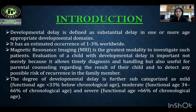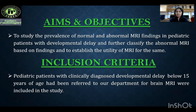The degree of developmental delay is further subcategorized as mild, moderate and severe. If the functional age is less than 33% below the chronological age, then it is called mild. If the functional age is 34-66%, then it is called moderate. And if the functional age is more than 66% of chronological age, then it is called severe developmental delay.